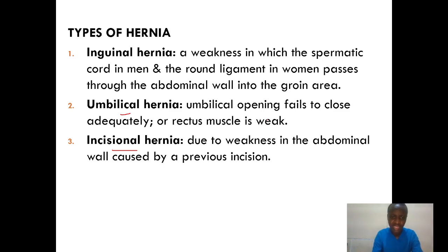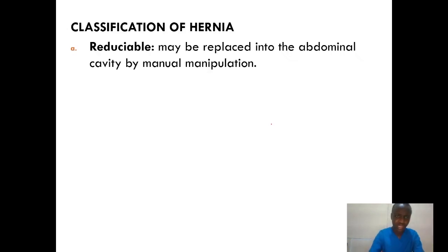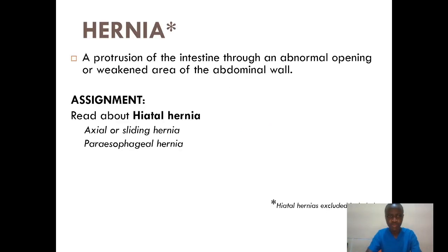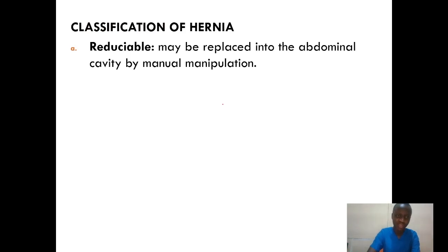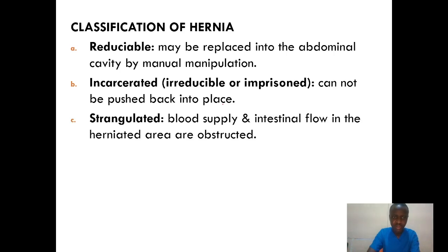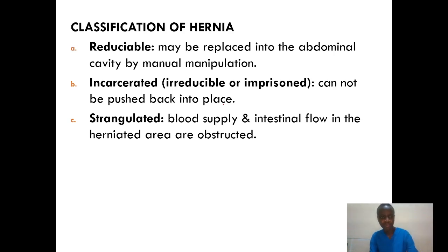We've talked about the three types — inguinal, umbilical, and incisional hernia. Now, how can we classify the types of hernia? We can broadly classify them as either reducible, incarcerated, or strangulated. Let's always remember that any sort of hernia, if it becomes strangulated, it is always a medical emergency. Starting with reducible: a reducible hernia may be replaced back into the abdominal cavity by bimanual palpation and manipulation.